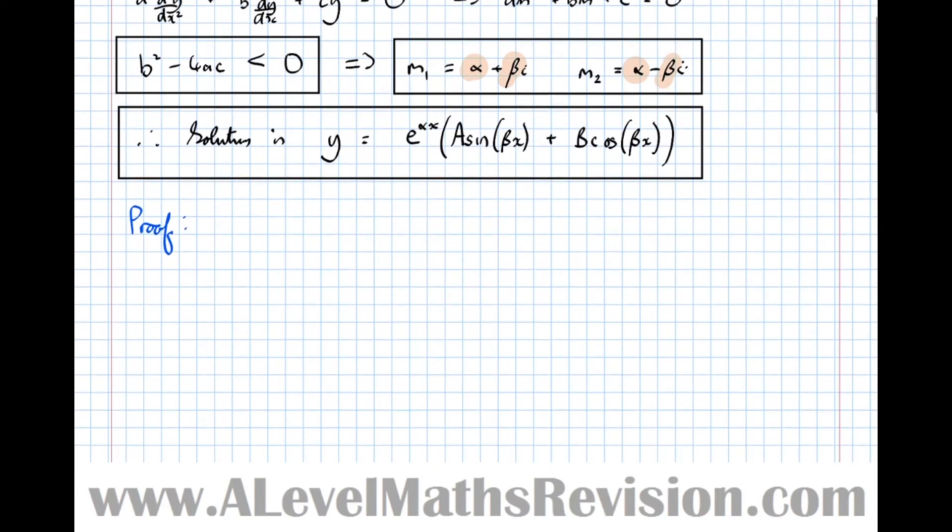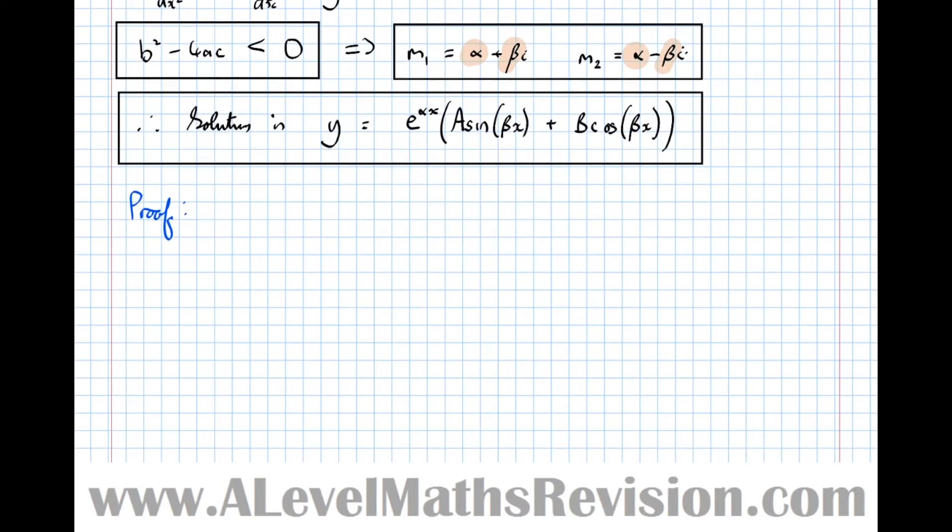So the proof. What we're going to start off with, we'll start off at this stage here. We're going to assume that these are solutions. So we've got y = Ae^((α+βi)x). And we've done a proof why that's the case in a previous video, the one that initially introduced the auxiliary equation.